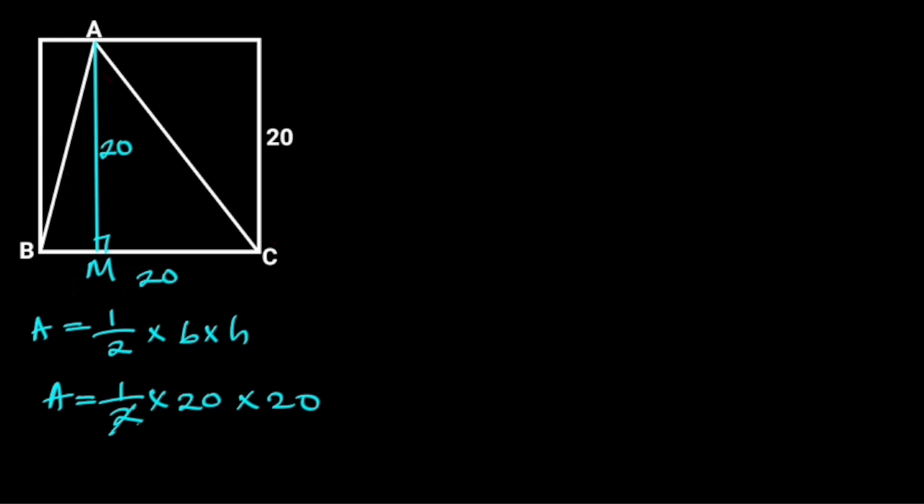20 divided by 2 is 10. So we are left with 1 times 10 times 20 which is equal to 200.